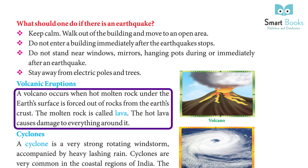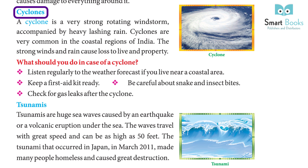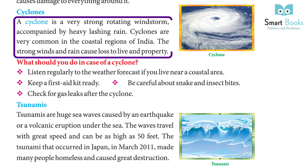Cyclones: A cyclone is a very strong, rotating windstorm accompanied by heavy lashing rain. Cyclones are very common in the coastal regions of India. The strong winds and rain cause loss to life and property.